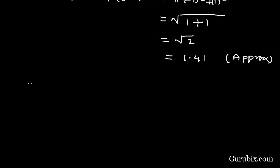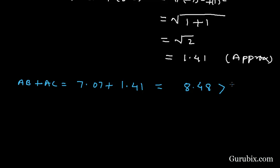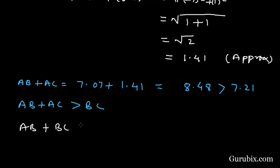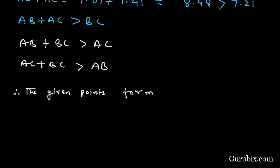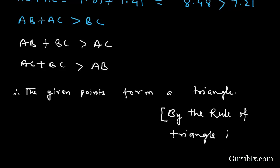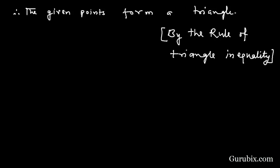Now we shall check whether these three points form a triangle. We find AB + AC = 7.07 + 1.41 = 8.48, which is greater than BC = 7.21. So AB + AC > BC. Similarly, AB + BC > AC, and AC + BC > AB. Therefore the given points form a triangle by the triangle inequality rule.